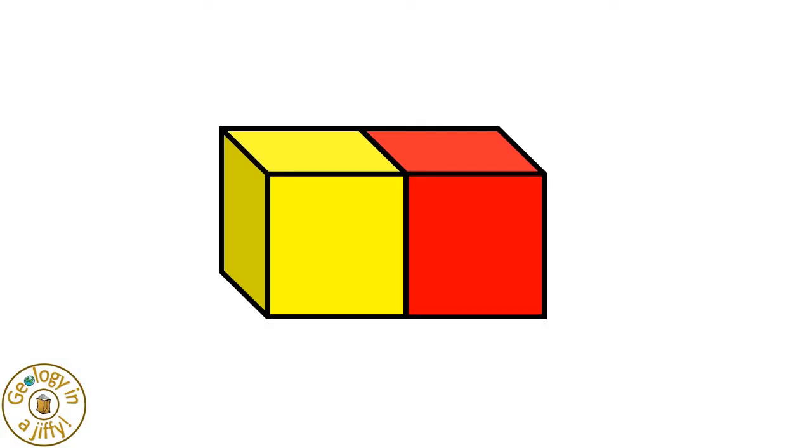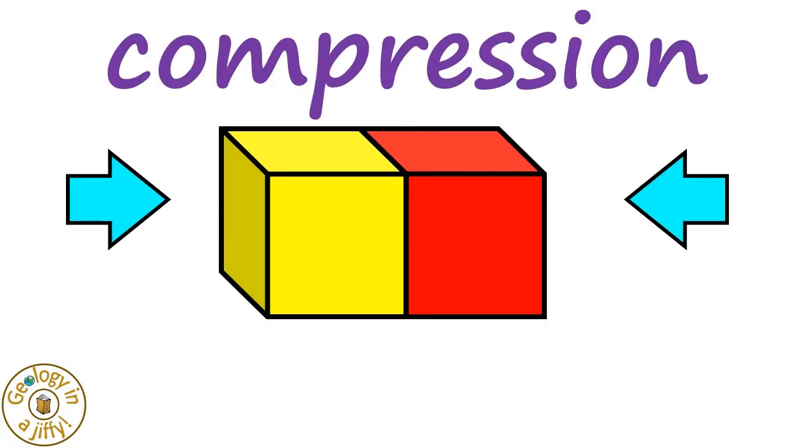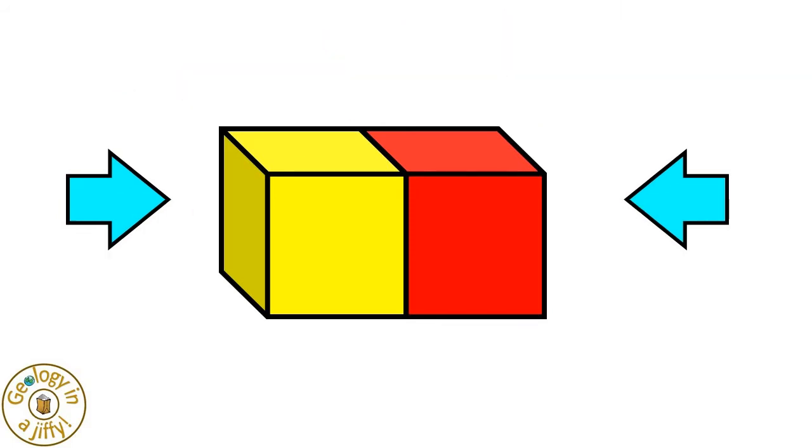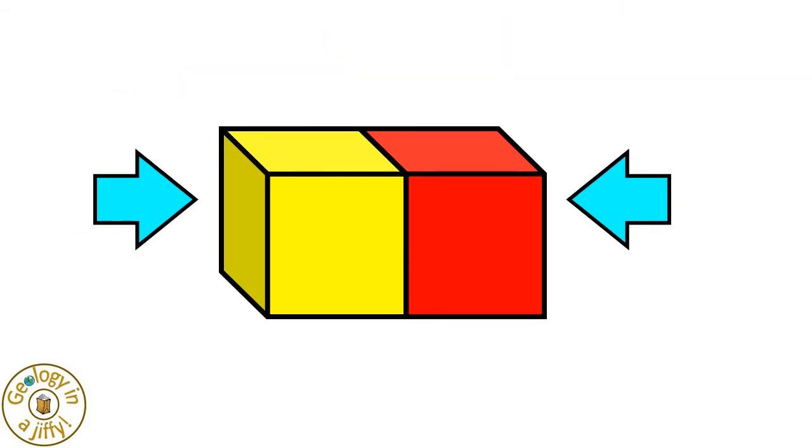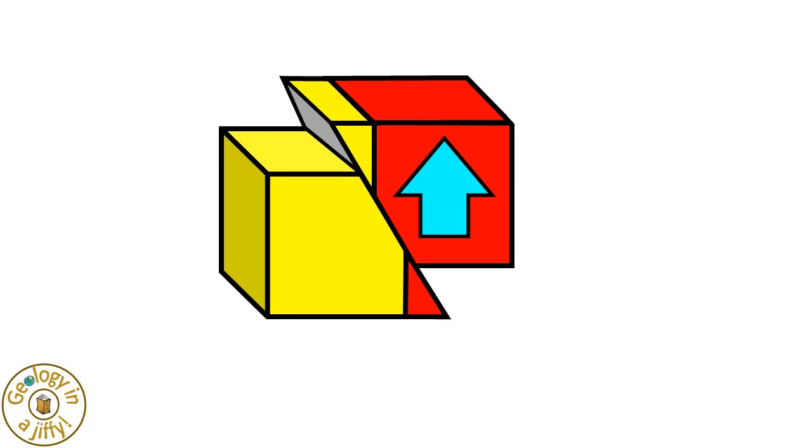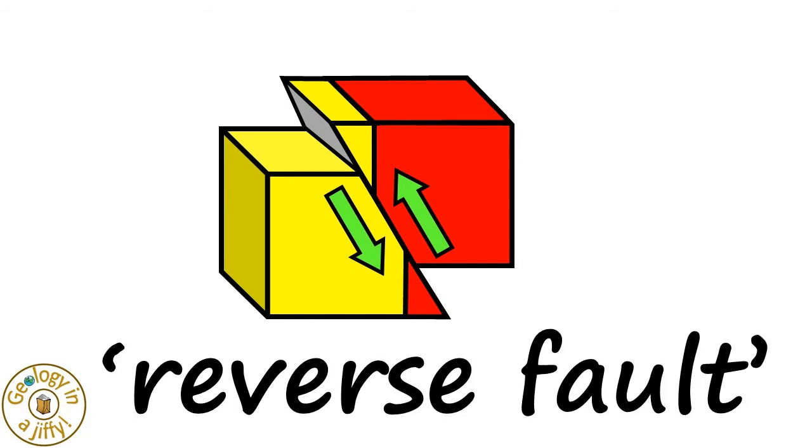A reverse fault forms when a block of rock undergoes squeezing due to compression. As the rock is compressed, part of the rock is forced upwards across a fault plane where one block of rock moves upwards and over in relation to the other block, forming a reverse fault.